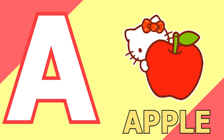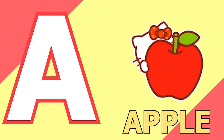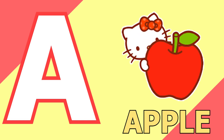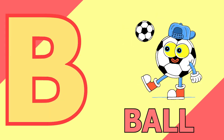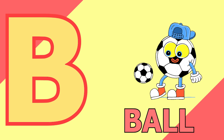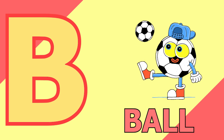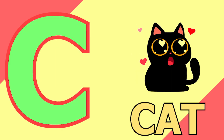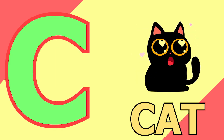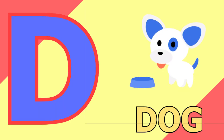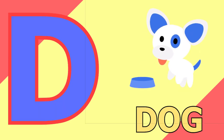A for apple, apple means save. B for ball, ball means gain. C for cat, cat means billy. D for dog, dog means kutta.